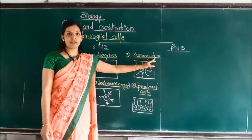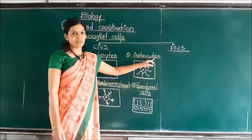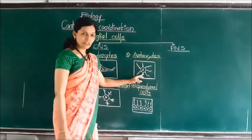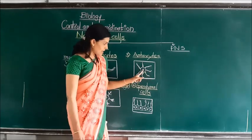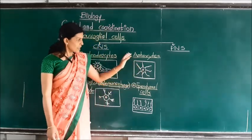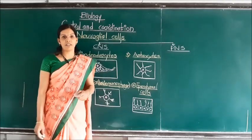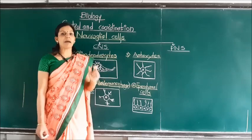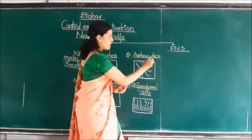Next we will focus on astrocytes. Astrocytes are star-shaped cells, which is why they are named astrocytes. Looking at their structure, they resemble a star and have a central nucleus. Astrocytes perform various functions, including maintaining the blood-brain barrier, or BBB.